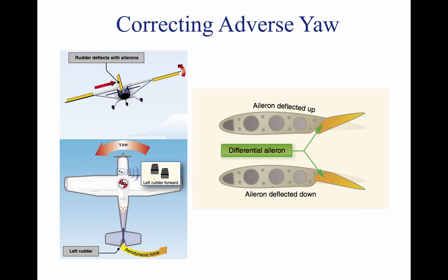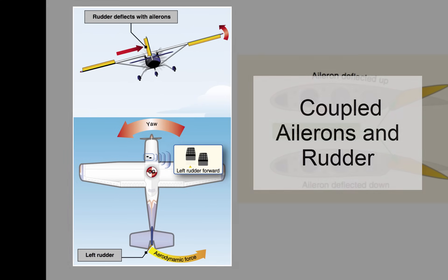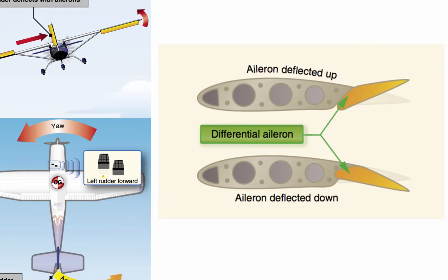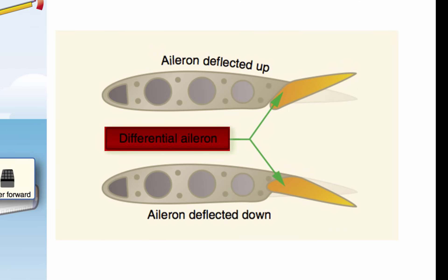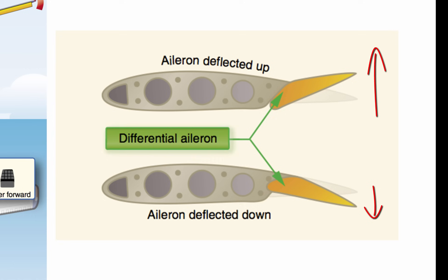There are four major systems used to counteract adverse yaw. The first system is coupling the ailerons with the rudder, pictured on the left, where the rudder moves in conjunction with the ailerons to correct for aileron drag. The second system is differential ailerons, pictured on the right. The aileron that deflects downward does not move as much as the aileron that deflects up, which helps by increasing drag on the descending wing, thus eliminating most of the yawing effect.